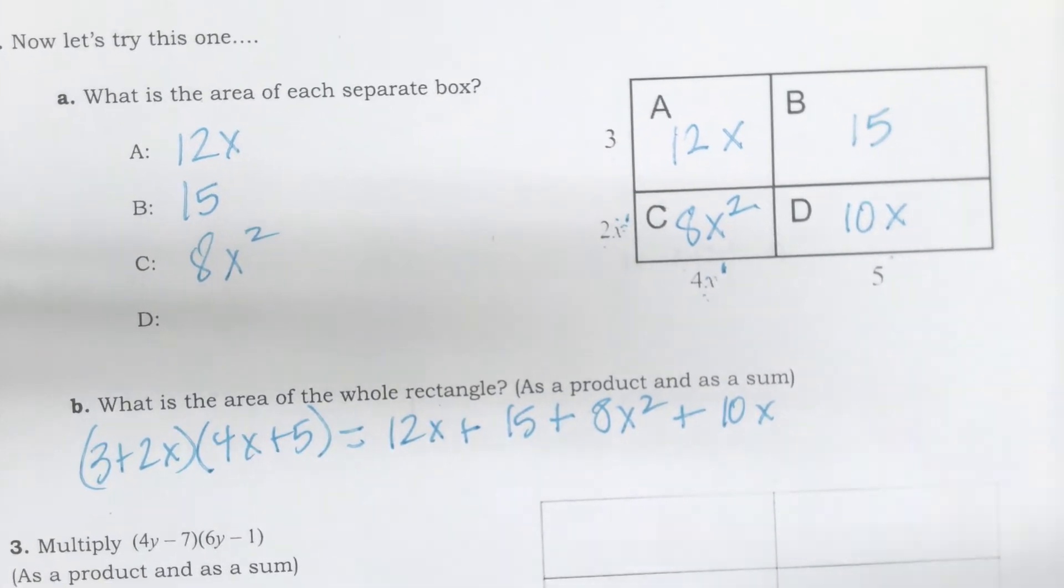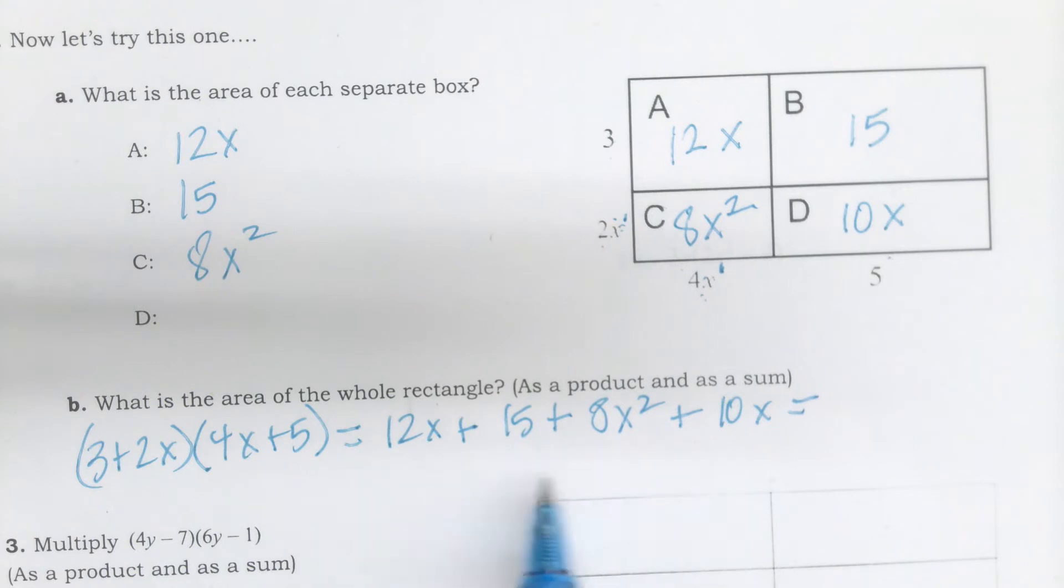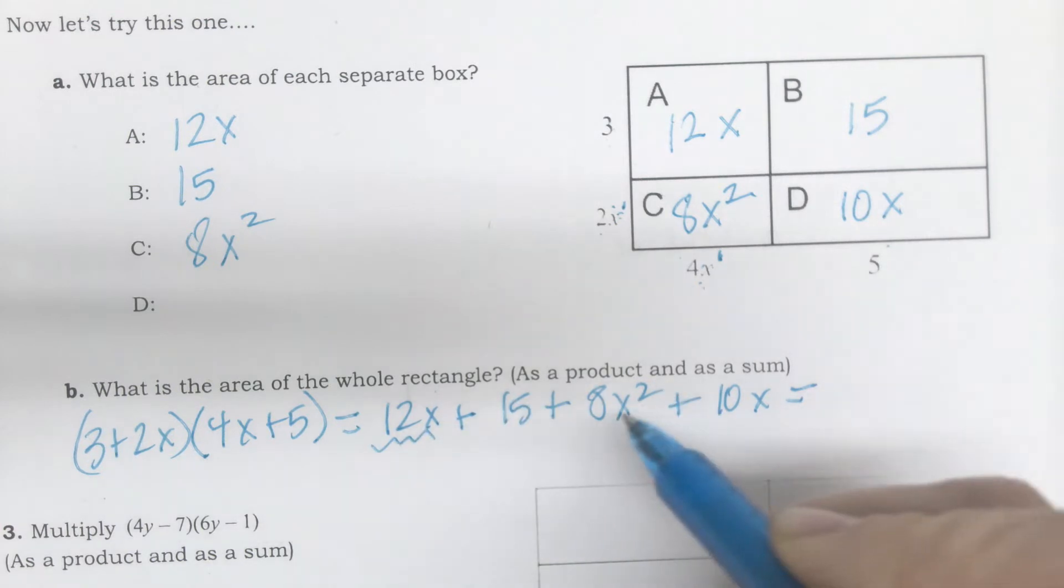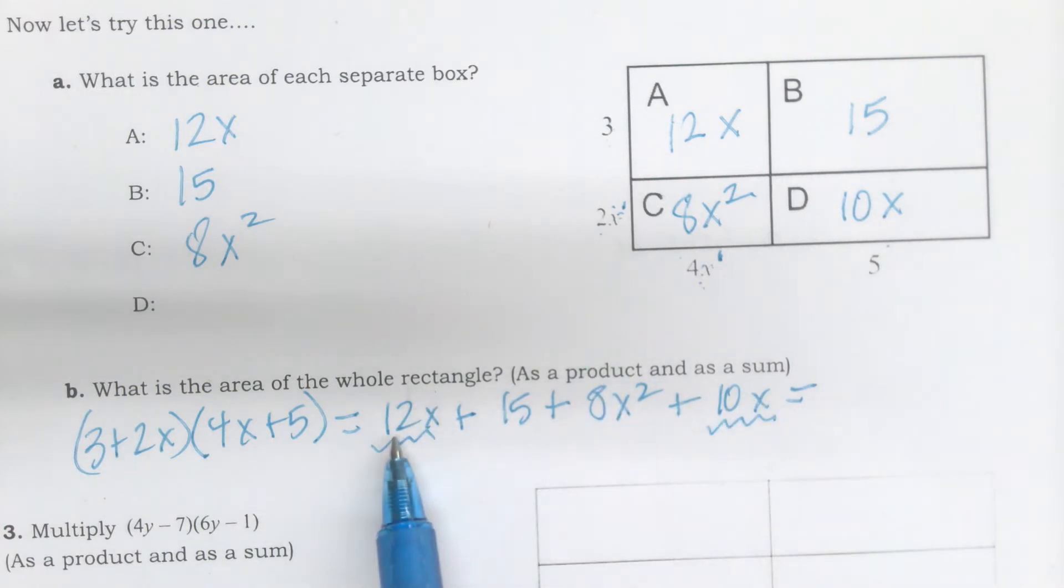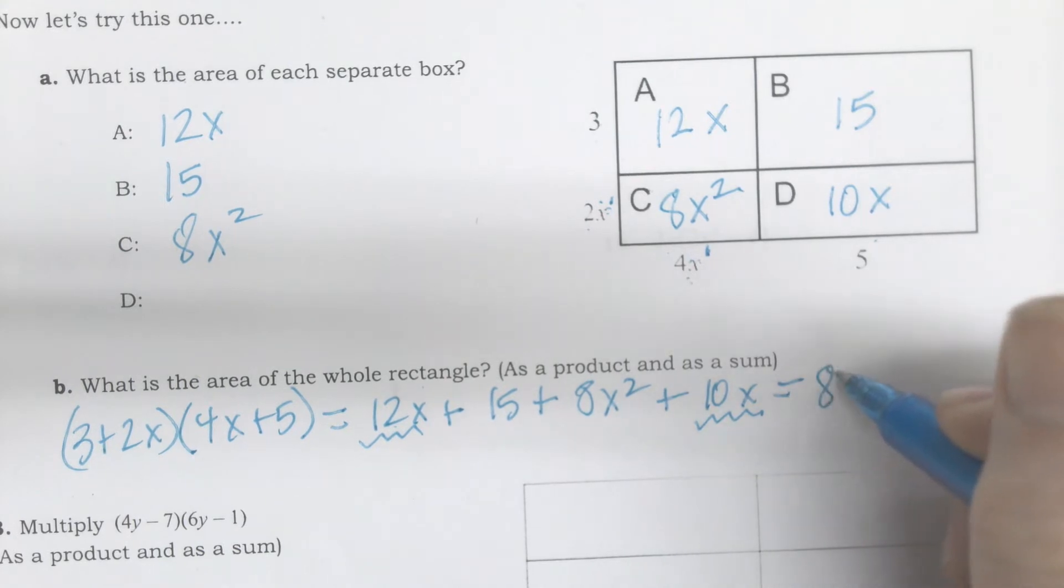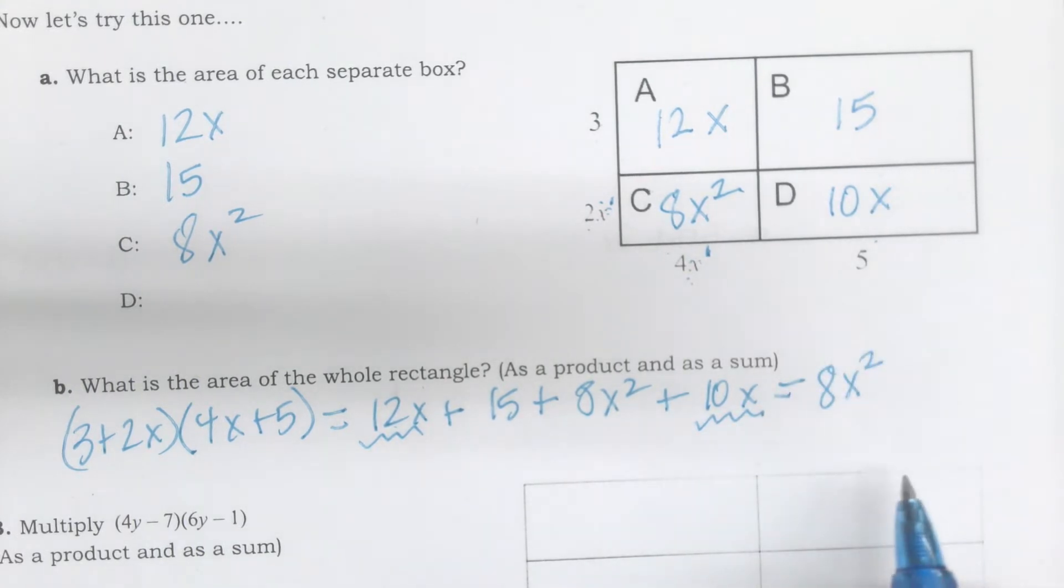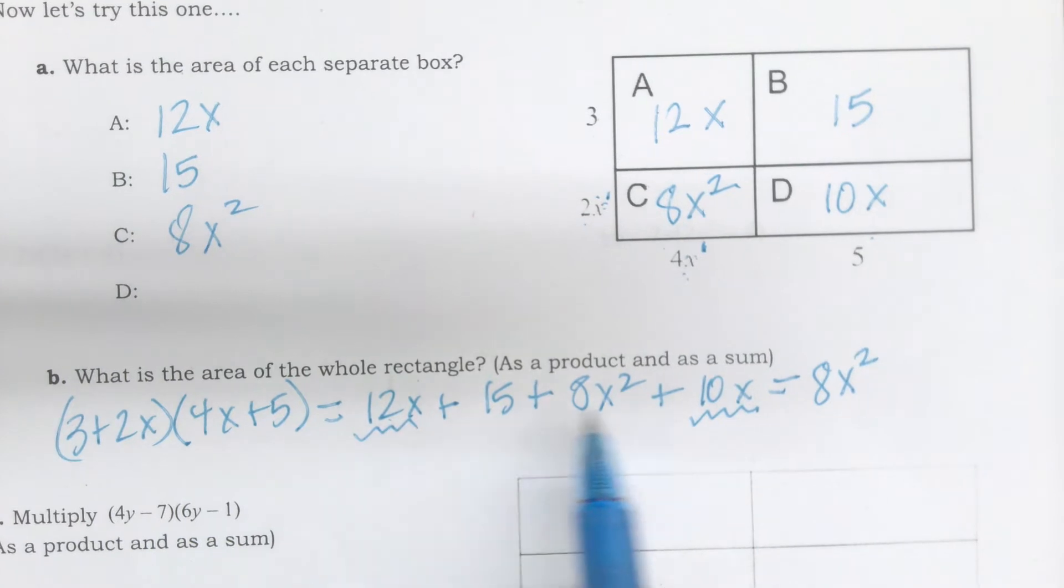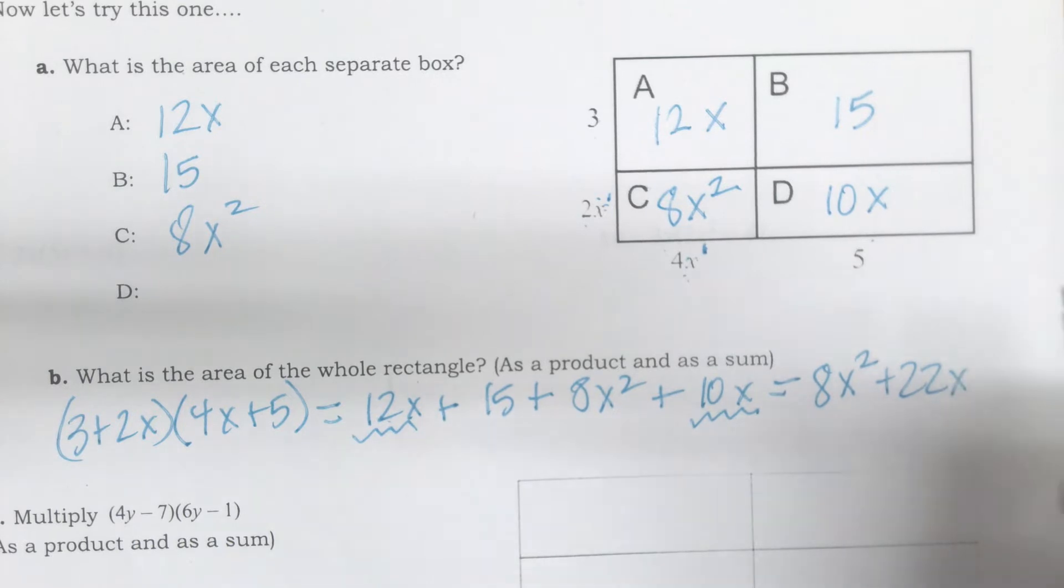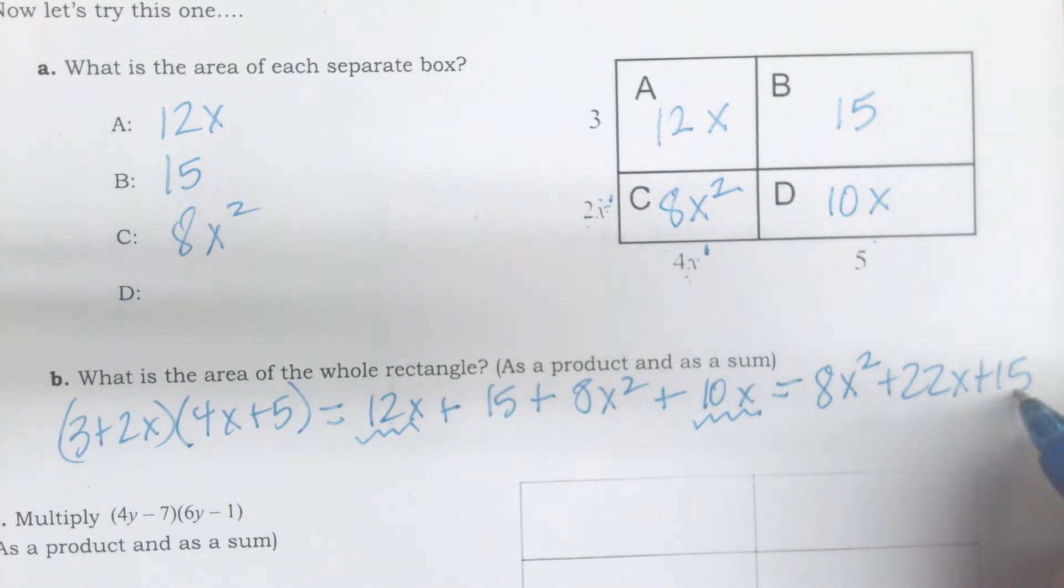So 12x plus 15 plus 8x squared plus 10x. Usually when I do this kind of stuff, I combine the like terms and put it in descending order, highest power first. So my highest power is 8x squared, then 12x plus 10x would be plus 22x, and then plus 15.